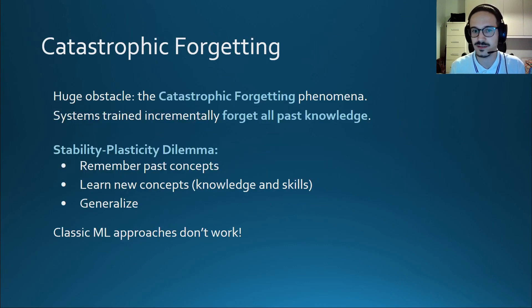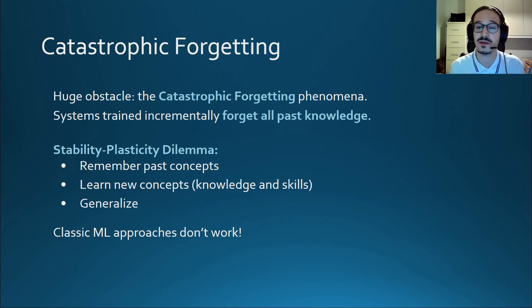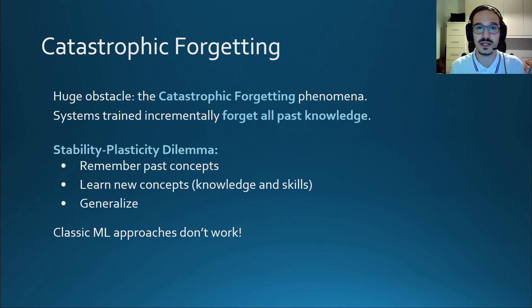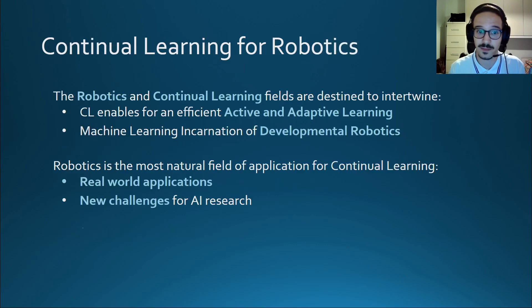It's not easy to create such a system. A system incrementally trained using classical machine learning approaches like backpropagation and gradient descent will forget all previously accumulated knowledge. This is called the catastrophic forgetting phenomenon.